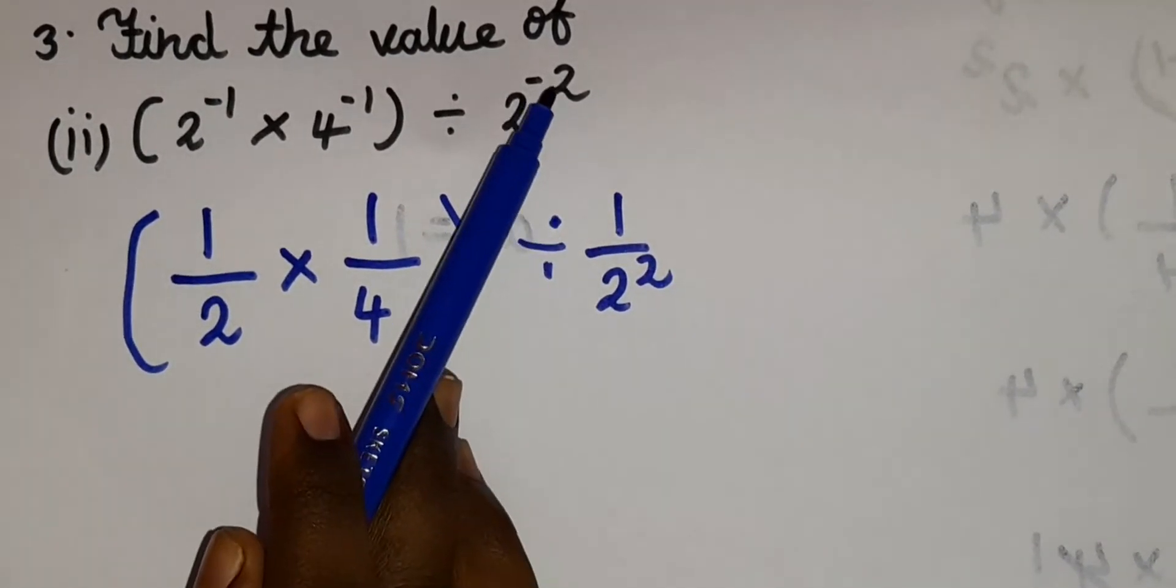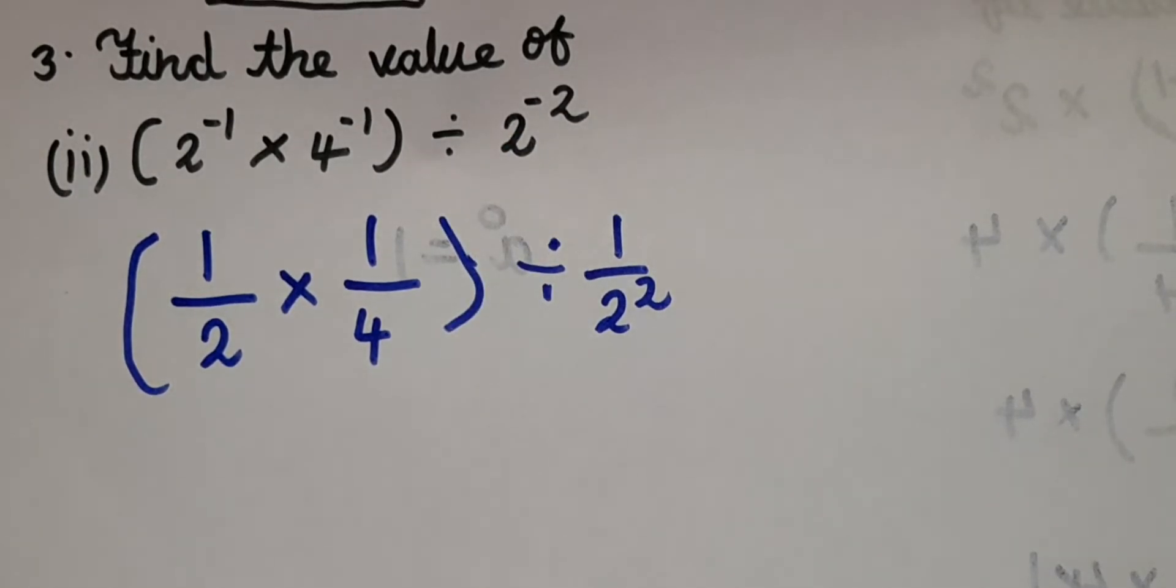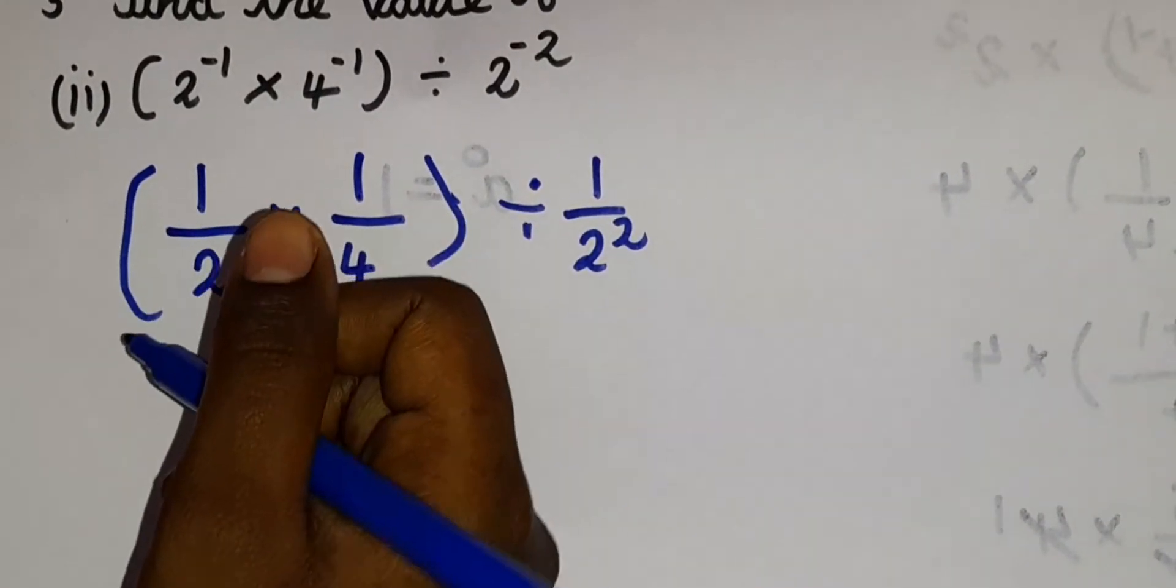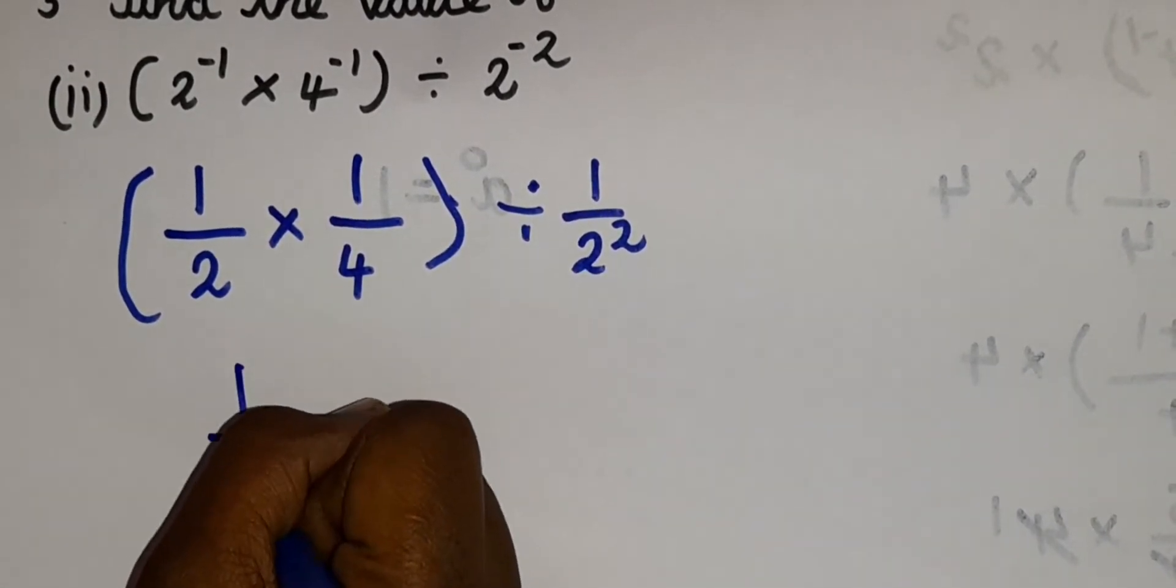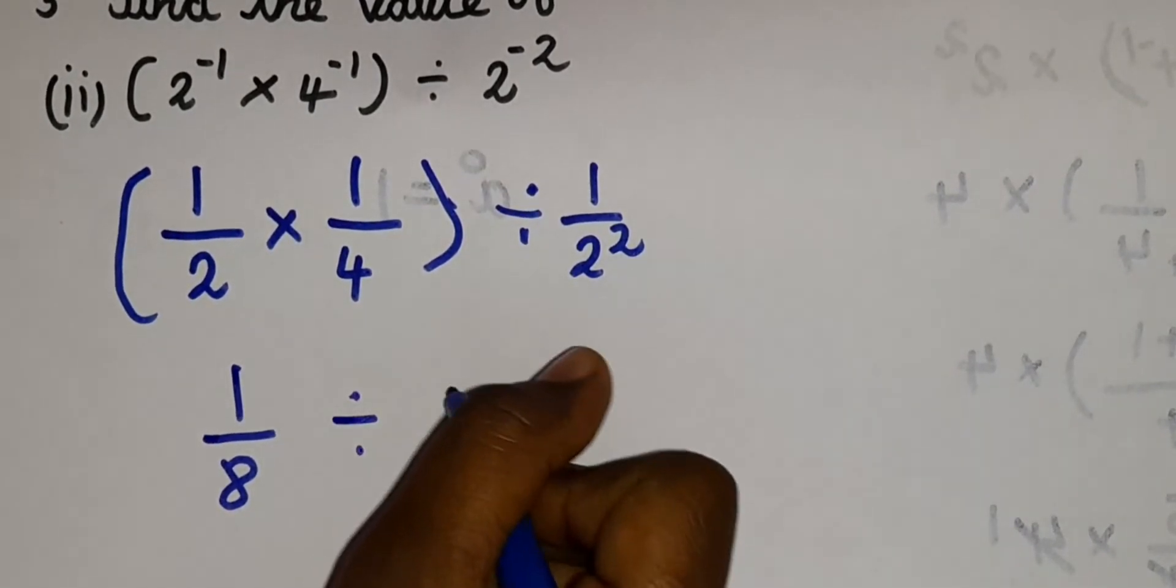When you are converting it, you should make sure that this minus symbol is not there. Now here you can see we can multiply it. So 2 into 4 is 8. So our answer is 1 by 8 divided by 1 by 4.